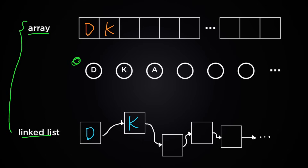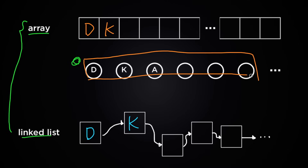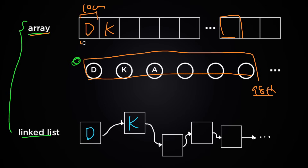Think about this situation: 100 people showed up to your party, but suddenly you realize the 98th person's name was misspelled and you want to fix it. With the array data structure, it's actually pretty easy — you just need to find the 98th partition, and that exact location can be calculated easily because you know each partition is 10 centimeters wide.